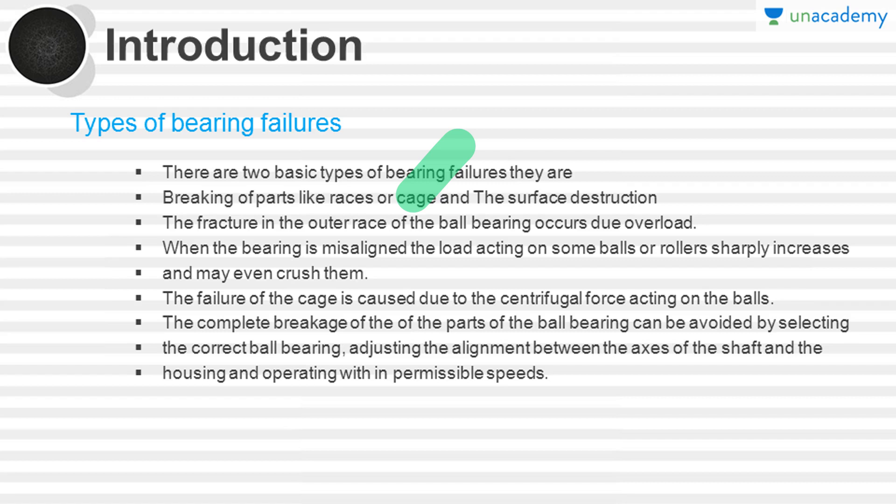Surface destruction refers to the destruction of the smoothness of the surface under the application of loading. These are the main types of bearing failures. The fracture in the outer race of a ball bearing occurs due to overload. When the bearing is misaligned, the load acting on some balls or rollers sharply increases and may even crush them, breaking the races or cages.